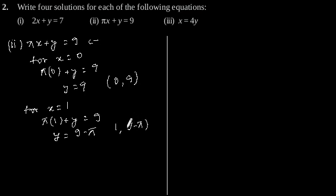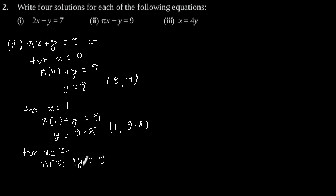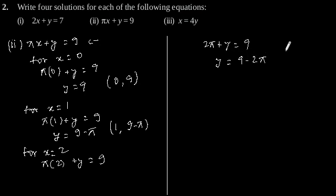Now let's put x is equal to 2 in the given equation. We will get π into 2 plus y is equal to 9. This gives 2π plus y is equal to 9, which gives y is equal to 9 minus 2π. So our third solution for the given equation is (2, 9 minus 2π).